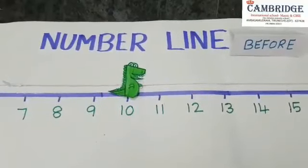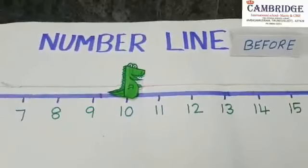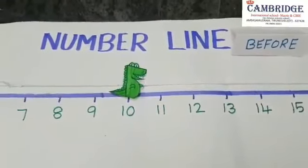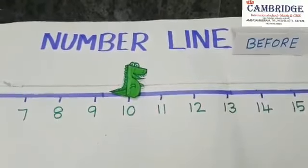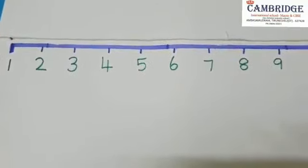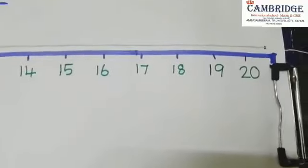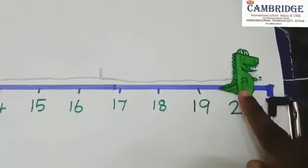Today we are going to learn before numbers using a number line. This alligator is also going to help us to find before numbers. Before numbers means previous numbers. Here I have drawn this number line from 1 to 20.